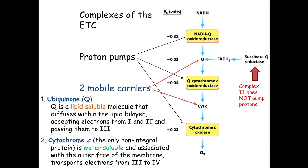Complex II is called succinate:Q reductase here, but it's the same as succinate dehydrogenase from the citric acid cycle — the exact same enzyme doing this part of the pathway. It mysteriously does not pump protons; it already had a day job as part of the citric acid cycle.